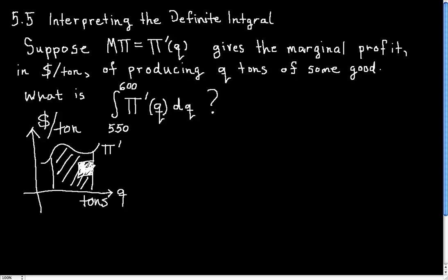So how do I interpret the area? Well, the area is the product of these. You take length times height, and so in this case, it's tons times dollars per ton.